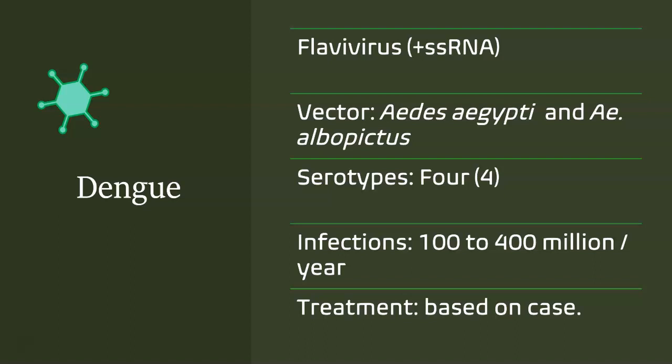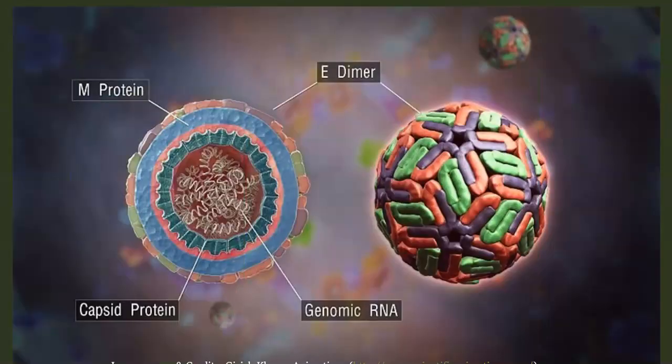There have been 100 to 400 million dengue infections reported per year. There are four serotypes of dengue, meaning you can be infected four times and will develop immunity perhaps to the first one, then face serotypes two, three, and four. This is very dangerous in places where dengue is endemic. Treatment for flaviviruses is based on a case-by-case basis. Some traditional native practitioners in this region even use papaya leaves — the bitter papaya leaf juice — which is supposed to be associated with recovery from dengue.